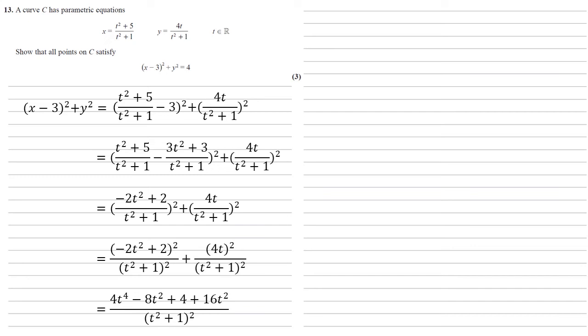the minus 2t squared plus 2 all squared becomes 4t to the power of 4 minus 8t squared plus 4. And on the right hand side, 4t all squared becomes 16t squared. The fractions have got the same denominator, t squared plus 1 all squared, so we can bring them together.